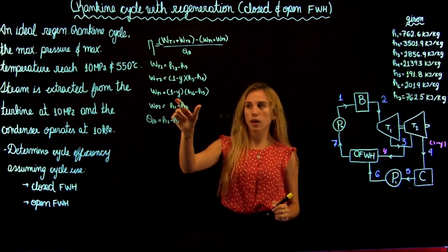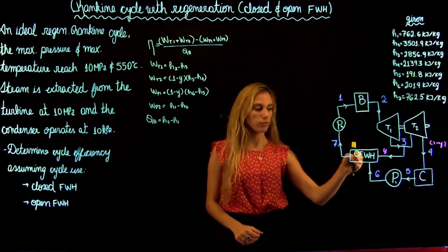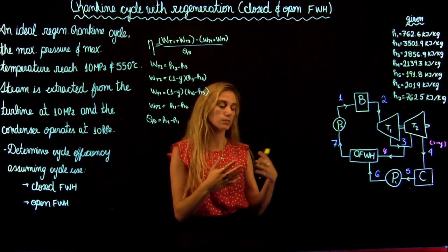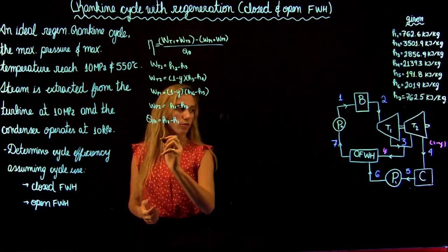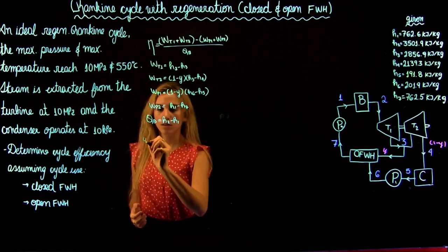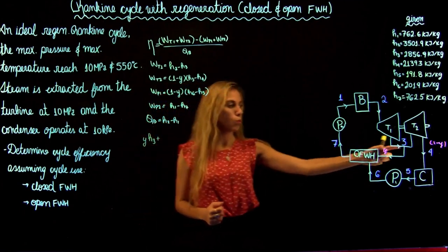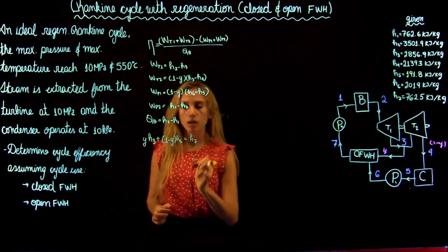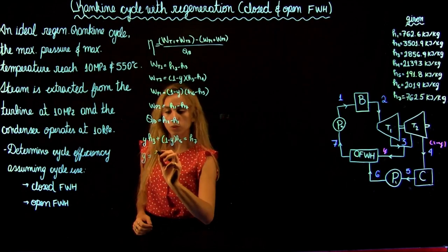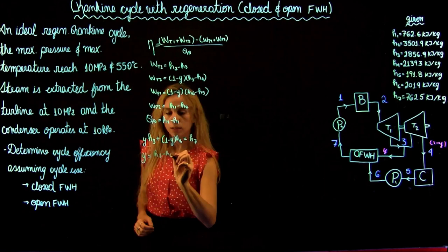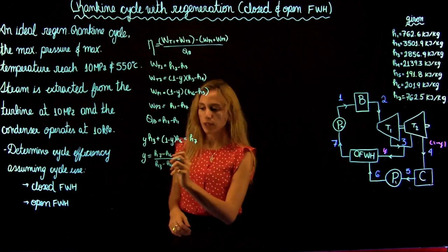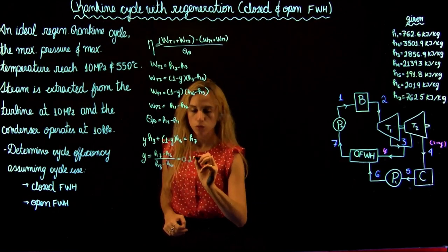Now we need to solve for Y by writing the energy equation for the open feed water heater. With two inputs and one output, by conservation of energy for a control volume: Y times H3 plus (1 minus Y) times H6 equals H7. Solving for Y gives Y equals (H7 minus H6) over (H3 minus H6). We have the values for all these enthalpies, so plugging in gives a value of Y equal to 0.2141.